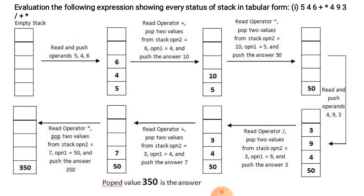We continue. Next operator is plus. Operand 1 is 4, and we apply plus. So 3 plus 4 is equal to 7. 50 remains as it is on the stack.